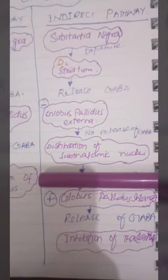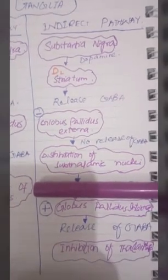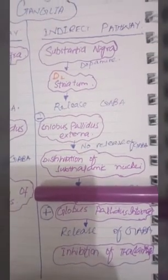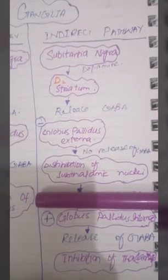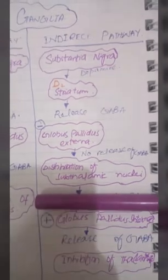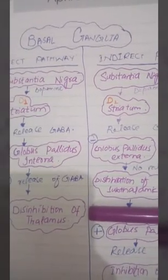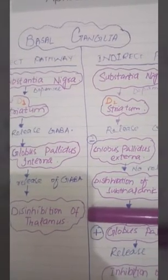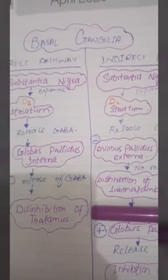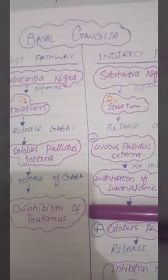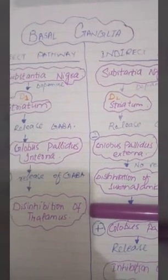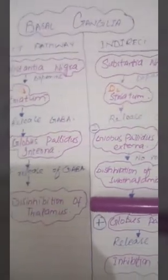So there are two structures not present in the direct pathway: Globus pallidus externa and the subthalamic nuclei. I hope this helps you understand this topic more easily. If you liked this video, please subscribe to this channel. Thank you.